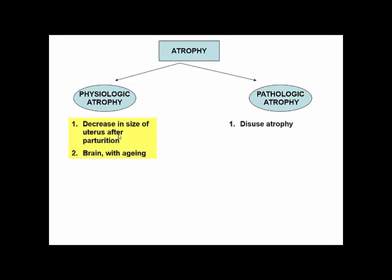Pathologic atrophy depends upon the underlying cause and can be localized or generalized. The first common cause is disuse atrophy — when muscles in a particular limb are not active, they slowly become weak and shrink in size. This can occur when a limb is immobilized in a plaster cast or when the patient is restricted to complete bed rest.